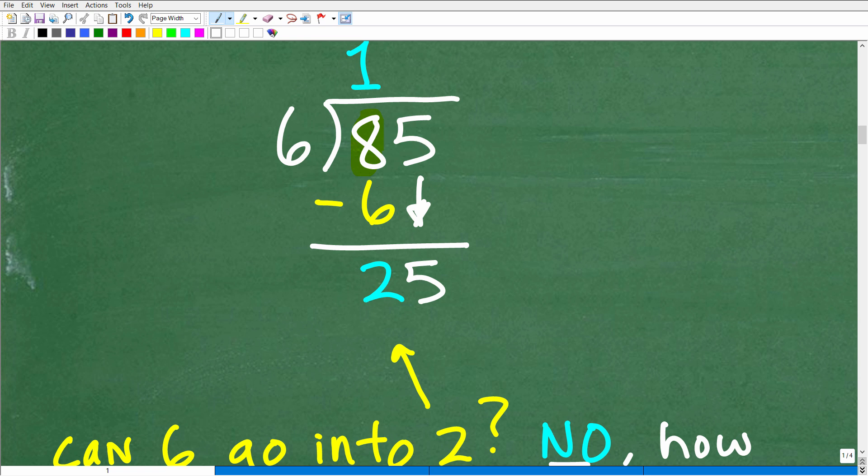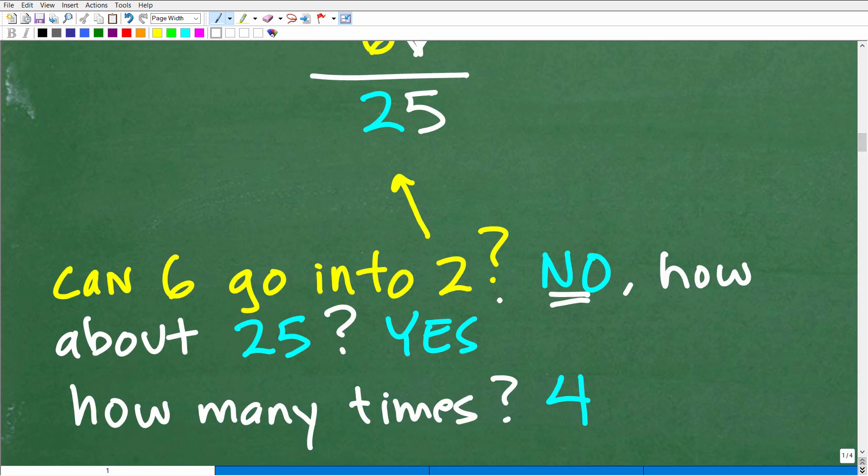Imagine if you had to program a computer with all these steps - there's a lot of little details here. So we're going to drop this 5 down here. Now we have the number 25. So now we're going to ask the same question: 6 can't go into 2, but how about 25? Can 6 go into 25? Well, of course it can.